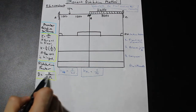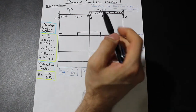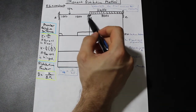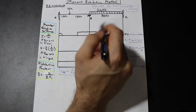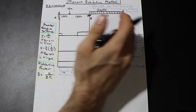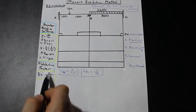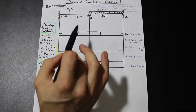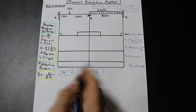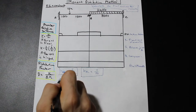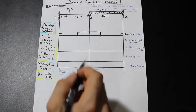Now we've got to look at the distribution factor. This is where the moment distribution method really comes in. When we have a continuous beam with a roller or pin support in the center, we're going to have to distribute the moment to the supports on the left and right of it. How much we distribute is based on the distribution factor — we need to find it for the left side and right side of support B. The distribution factor is k for the section divided by the summation of all the k's.